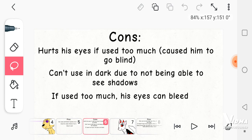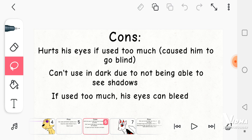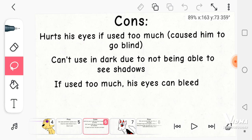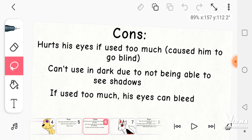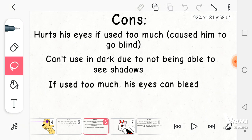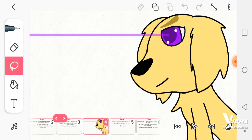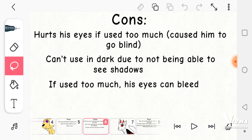And then cons. It hurts his eyes if he uses it too much, which is what caused him to go blind. Two, can't use in the dark because of not being able to see people's shadows. Because Milkshake, since he's blind, he needs to be able to see their shadows.